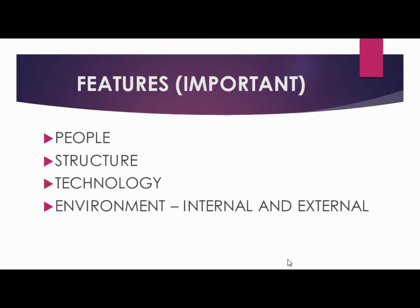People basically refers to the group — all the employees of the organization — who look after different types of tasks. Structure covers the internal values, regulations, and internal policies of the organization. Technology is basically the functionality — the advancement — meaning that if there is a problem in the organization, it comes under technology.